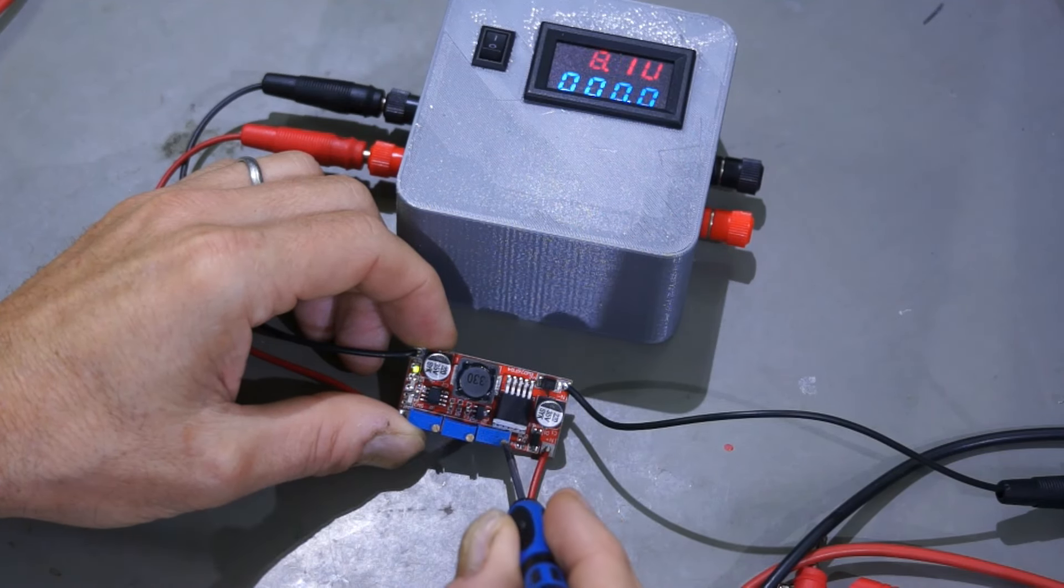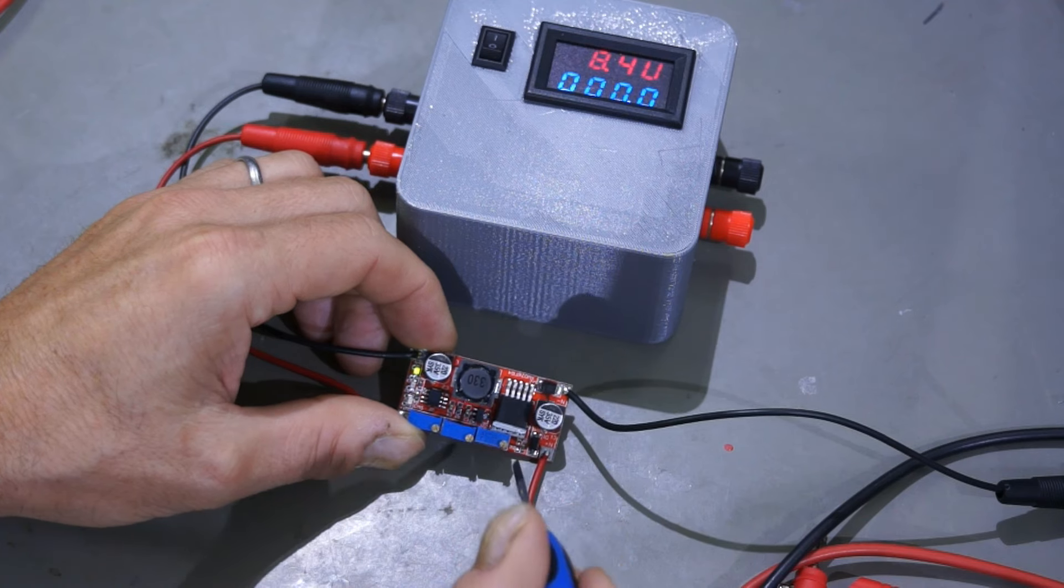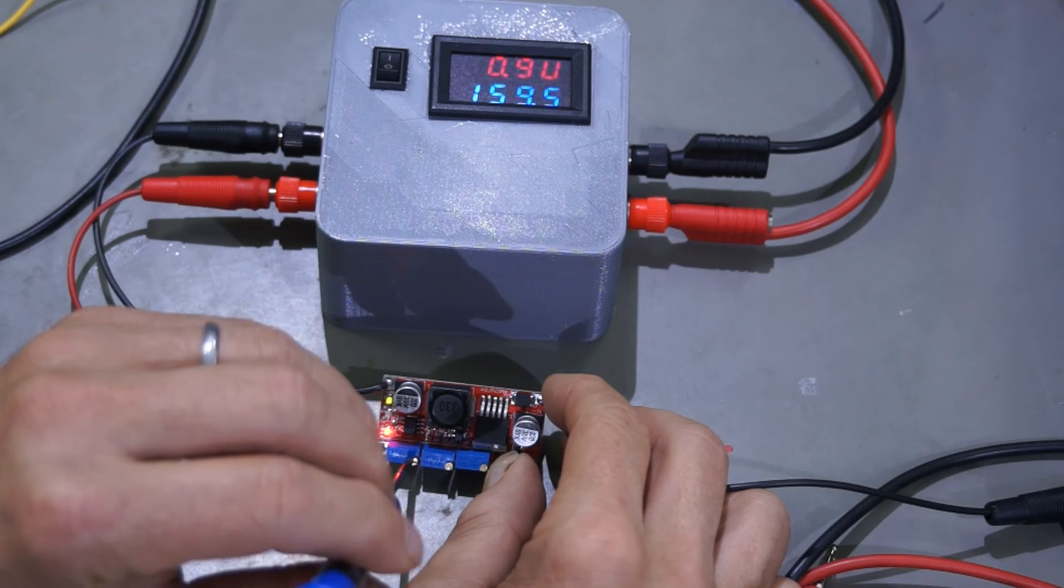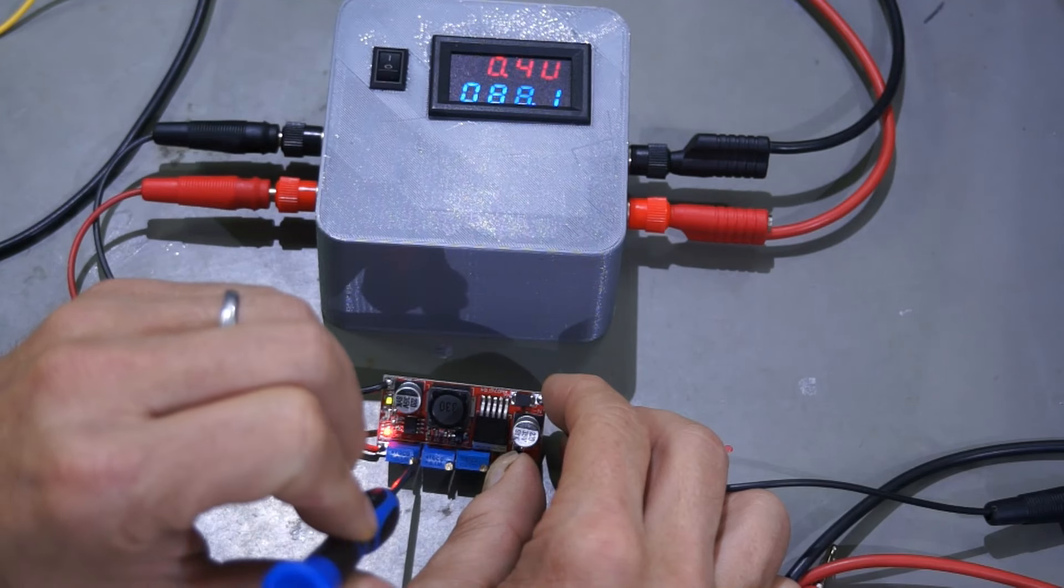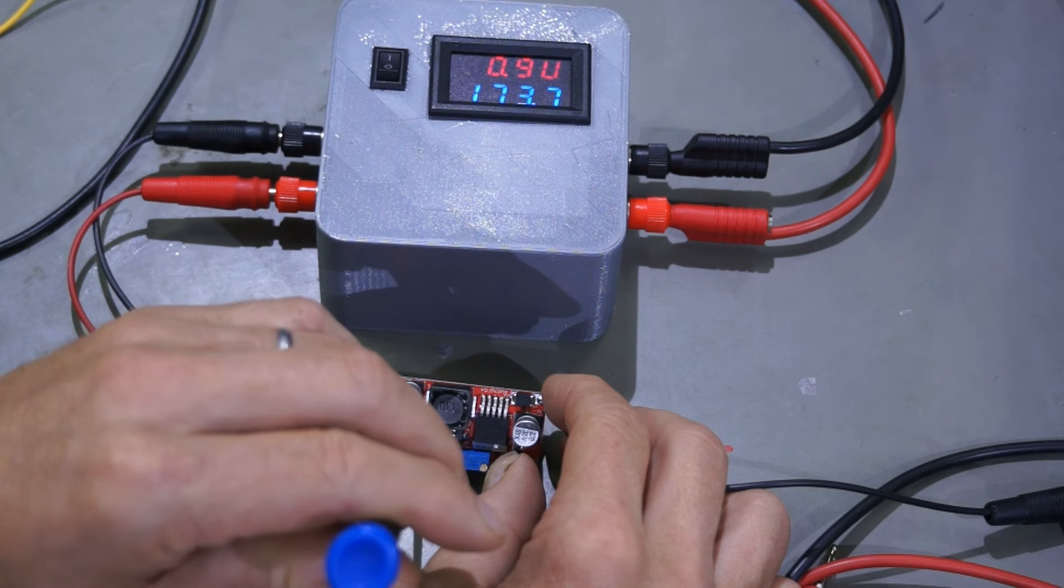The right trimmer sets the voltage and the left trimmer limits the current. One LED lights up to inform you when the current is limited.